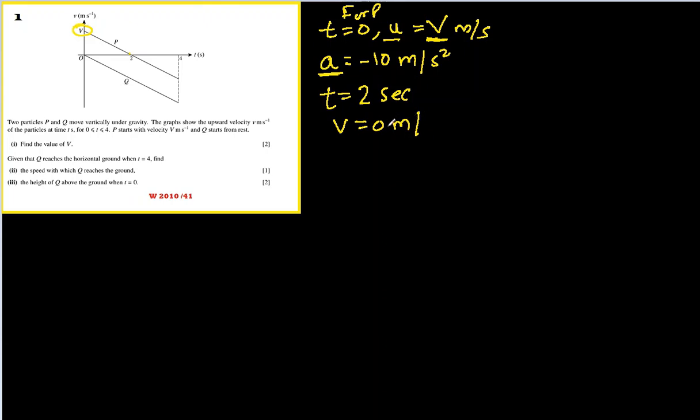V equals u plus at. V we know is zero, it stopped at two seconds. U we know is v plus acceleration is minus 10 and time is two. So we can find zero equals v minus 20, v comes out to be 20 meters per second.